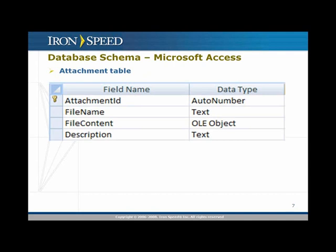To accomplish this we need a database schema. I'll show two examples — one in Microsoft Access and one in SQL Server. Today we'll use Microsoft Access. The attachment table has four fields: a unique ID called attachment ID, a file name text field of about 255 characters, a file content field, and a description field. Microsoft Access doesn't have a binary object field, so we use an OLE object field, which is essentially just a binary field.